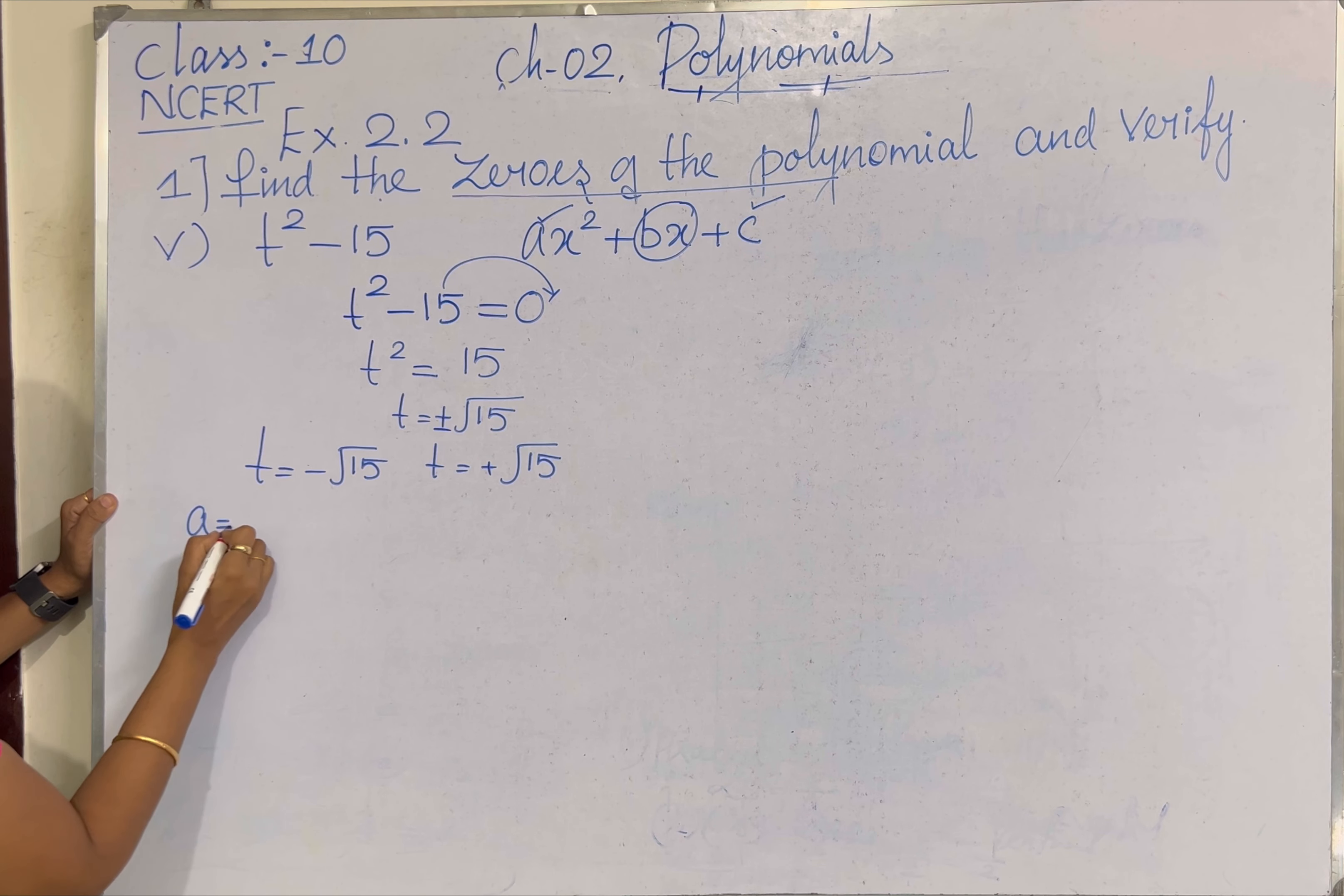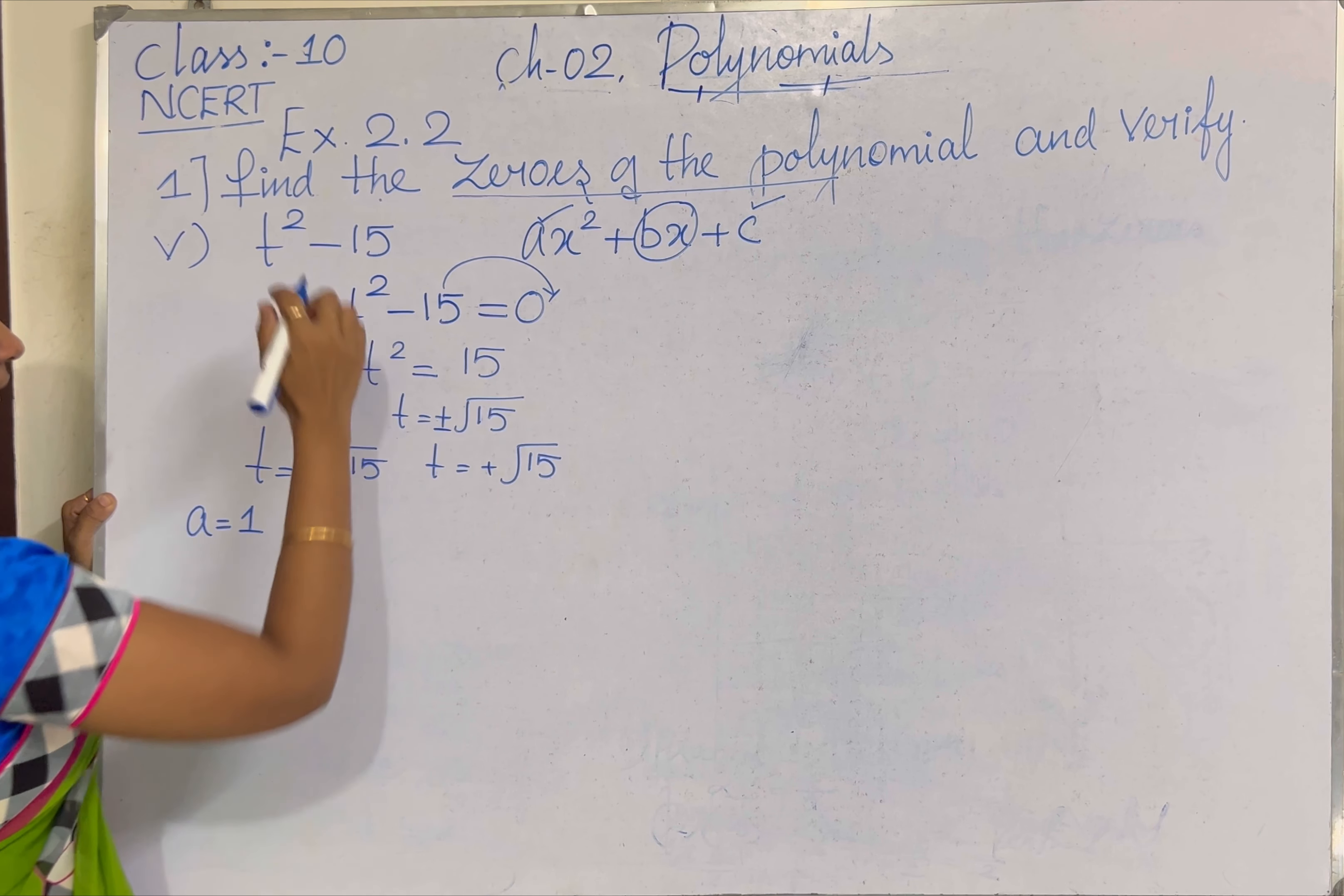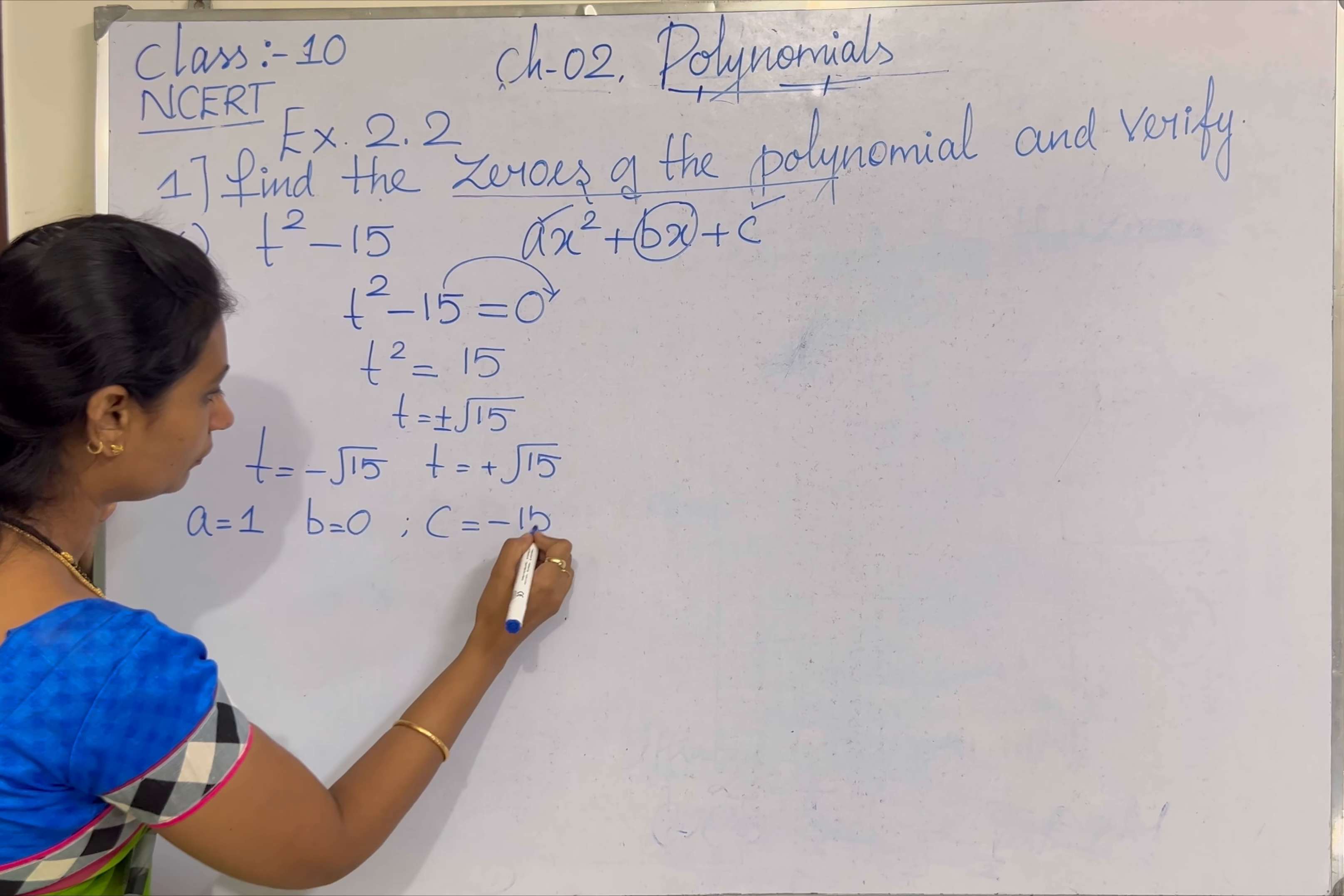Next we need to find out the coefficient of the T² term. The coefficient of T², A equal to 1, and B equal to, we don't find any T term, so constant B will be 0 and the constant term C will be minus 15.